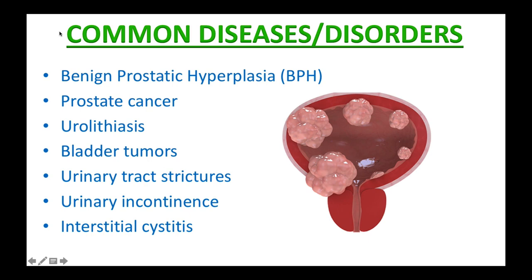Here are some common diseases and disorders of the urinary system that usually require some kind of intervention. Benign prostatic hyperplasia (BPH), also called prostate gland enlargement, can block the flow of urine out of the bladder — a very common condition as men get older. Prostate cancer. Urolithiasis means calculi or stones that form in the urinary tract. Bladder tumors. Urinary tract strictures. Urinary incontinence is the loss of bladder control — the inability to hold urine in the bladder. Interstitial cystitis is a chronic condition causing bladder pressure, bladder pain, and sometimes pelvic pain.